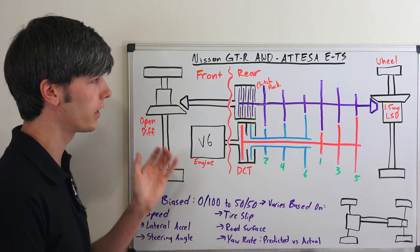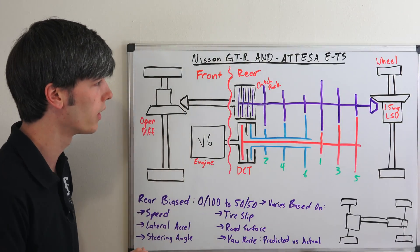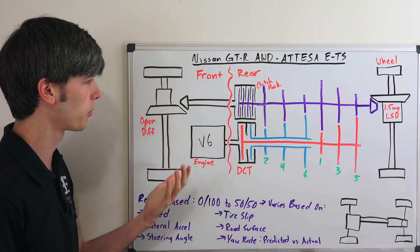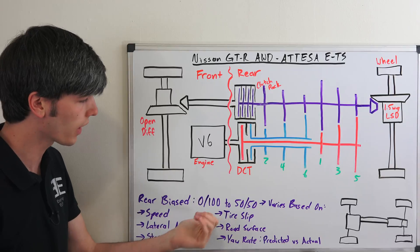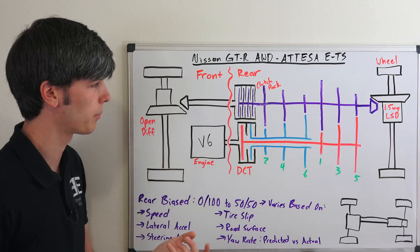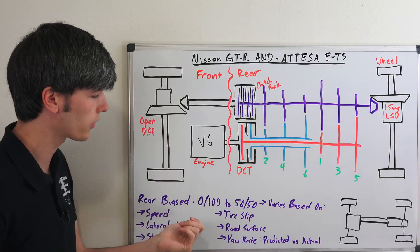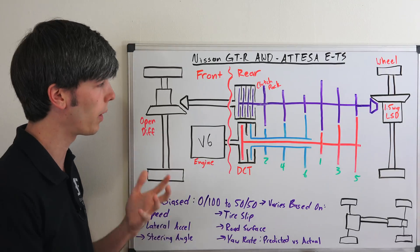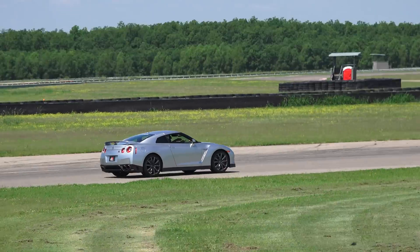If you're going in a straight line, it can just send power just to the rear so that you don't need to waste any of that energy, especially at higher speeds. Tire slip - so if one of these wheels starts to slip, obviously you can send power to the other axle. Road surface - if it's super bumpy, it may start to lock that up.